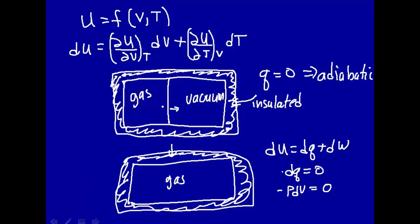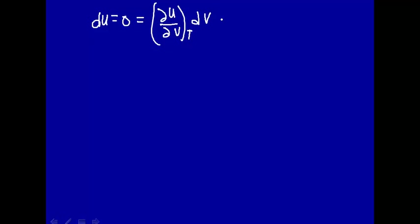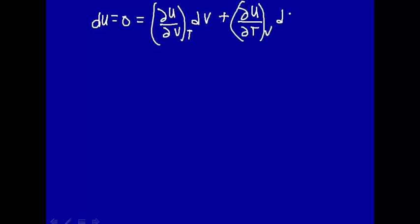This adiabatic expansion of an ideal gas into a vacuum means that du is equal to zero. There's no change in the internal energy of the gas as it expands adiabatically into a vacuum. So we know that du equals zero, and we also know that du equals the partial of u with respect to volume at constant temperature times dV, plus the partial of u with respect to temperature at constant volume times dT.